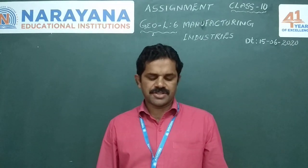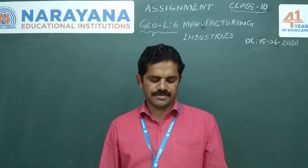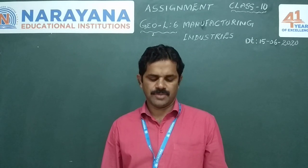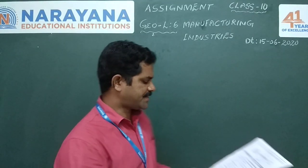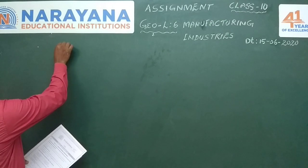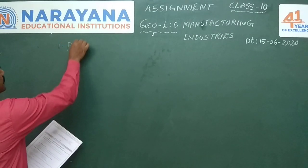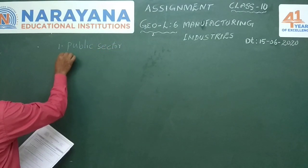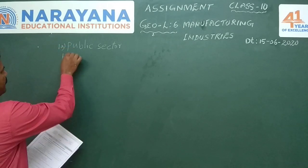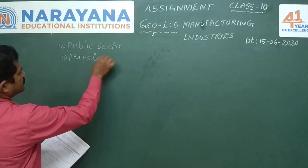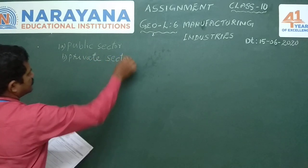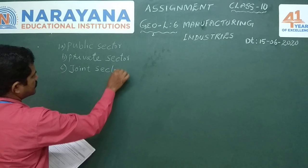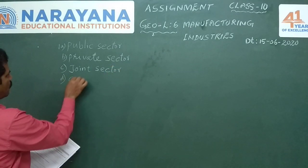Here there are 10 questions to be discussed, which can be answered in 1 to 2 sentences. Question No. 1: Classify industries on the basis of ownership. On the basis of ownership, industries are classified into four types: Public Sector Industries, Private Sector Industries, Joint Sector Industries, and Corporate Sector Industries.